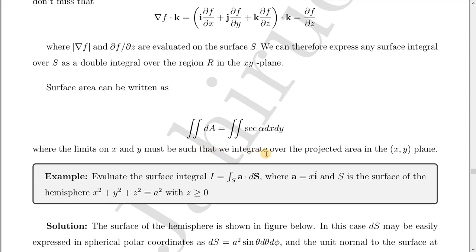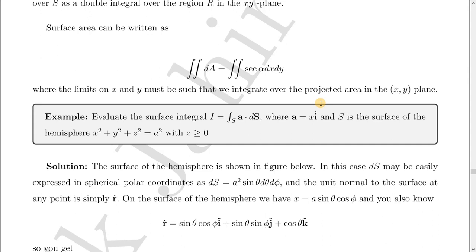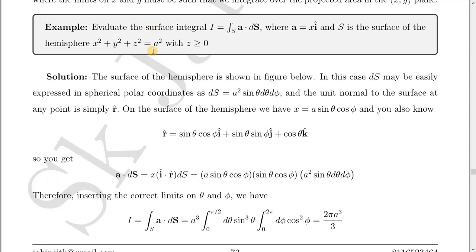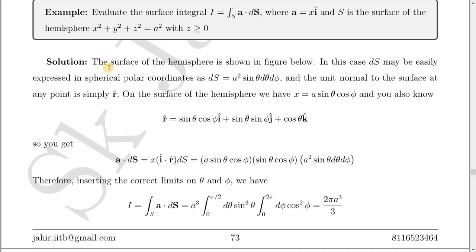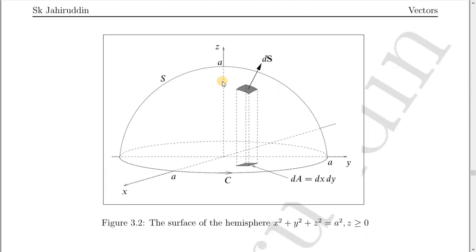Now we will start with an example. Evaluate the surface integral I = ∫ A·dS, where A = x î and S is the surface of the hemisphere x² + y² + z² = a², with z ≥ 0. The solution: the surface of the hemisphere is shown in the figure. We need to evaluate the vector surface integral over that hemisphere, which has radius a.